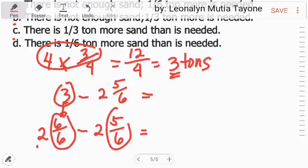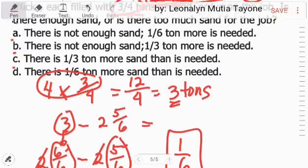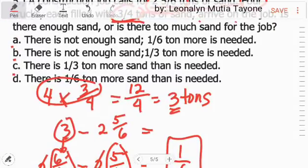Minus 2, 5 over 6. So, dito tayo sa fraction. Kopyahin ang denominator na 6. Then, ang numerators. 6 minus 5 equals 1. Ang mga whole numbers natin, 2 minus 2 equals 0. So, ang sagot dito ay sobra ng 1/6. Hanapin natin sa mga choices dito. There is not enough sand. So, mali na yan. Yung mga not enough, mali na yan.